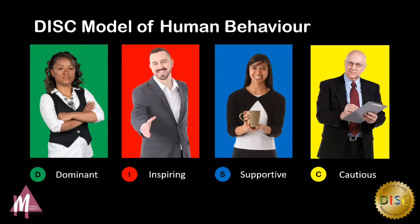The D's are very dominant — determined, driven, they get stuff done. The old saying goes: if you want something done, give it to a busy person. The I's are inspiring, interactive, influential, imaginative, and they love to talk. They're the easiest type to spot because they're always talking. The S's are supportive, sensitive, sweet, often shy — the nicest people in the world who love to help others. The C's — the cautious — are very careful, competent, and calculating. They love rules, procedures, processes, and details. You can never give a C too many details.